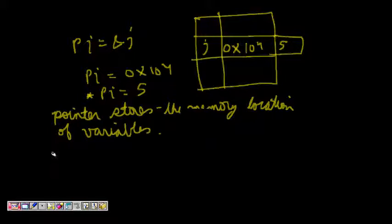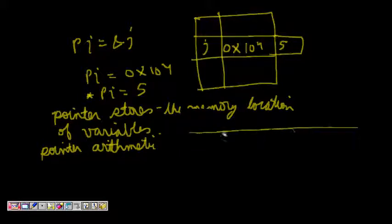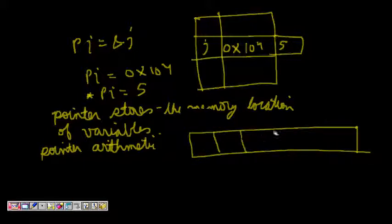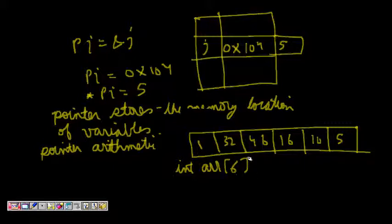So next thing is about pointer arithmetic. So pointer arithmetic - what it is? Pointer arithmetic: if I have, let's say, integer array, we have 6 values - 1, 32, 46, 16, 10 and 5. And let's say this integer array is ARR and we have 6 values in it. And let's say this is the memory location 100